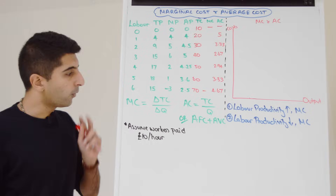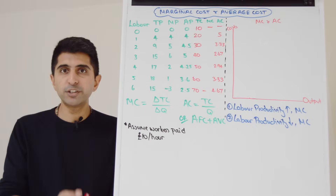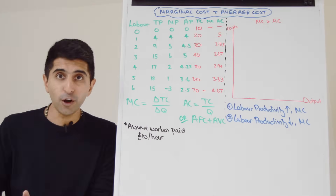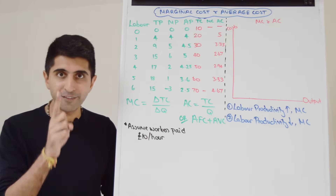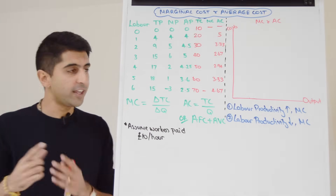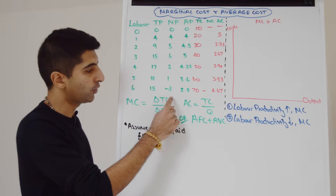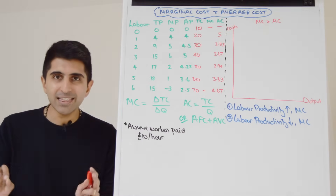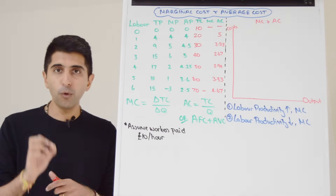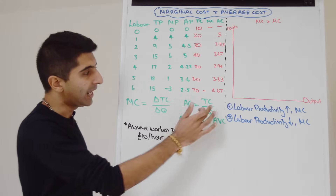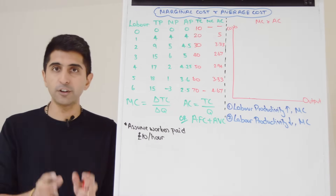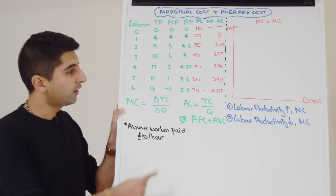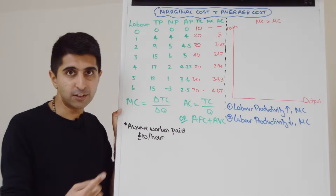What about marginal cost? Marginal just means extra, so marginal cost is the extra cost when we produce one more unit of output. The equation is the change in total cost divided by the change in quantity. The marginal anything in economics will always have a very simple equation — it's always going to be the average equation just with changes in it. So marginal cost is just the average equation but with changes.